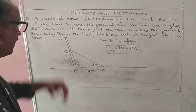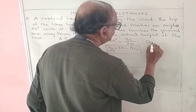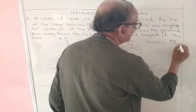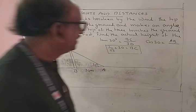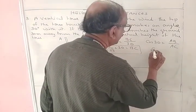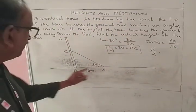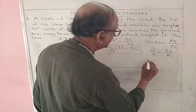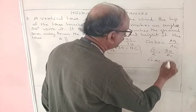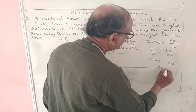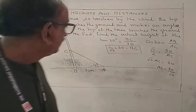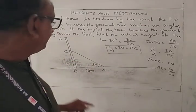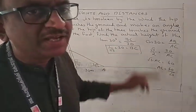Next, find cos 30 to get AC. The hypotenuse is AC. Cos 30 equals root 3 by 2, equal to adjacent side AB, which is 30, divided by AC. Then cross multiplying, root 3 into AC equals 30 into 2, giving AC equal to 60 by root 3. Therefore BC is the lower part of the tree and AC is the top portion of the tree.